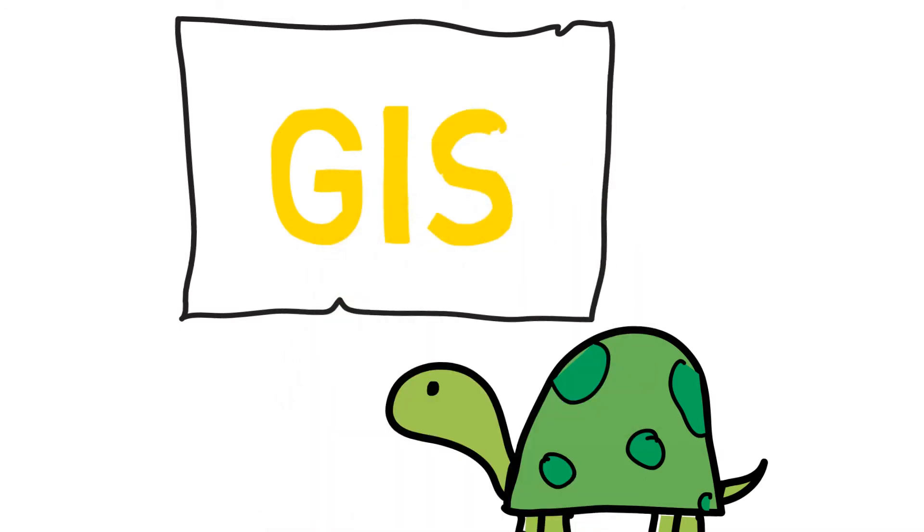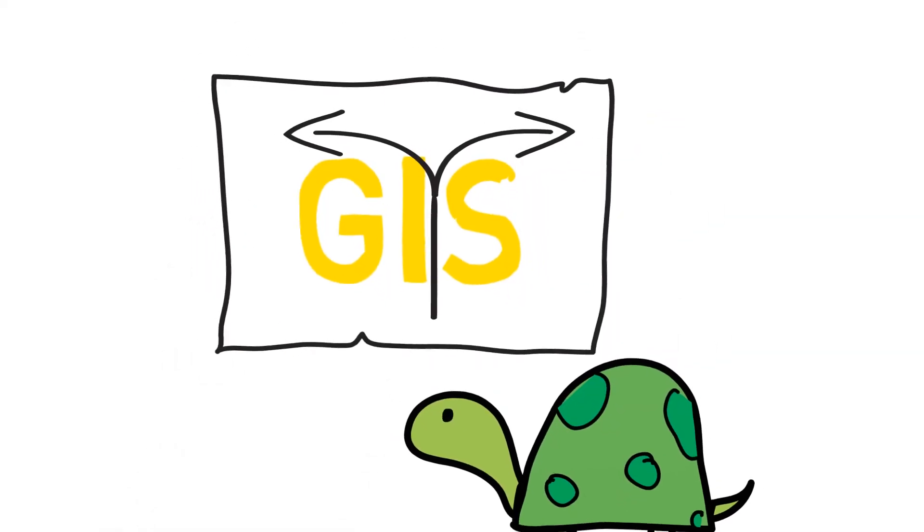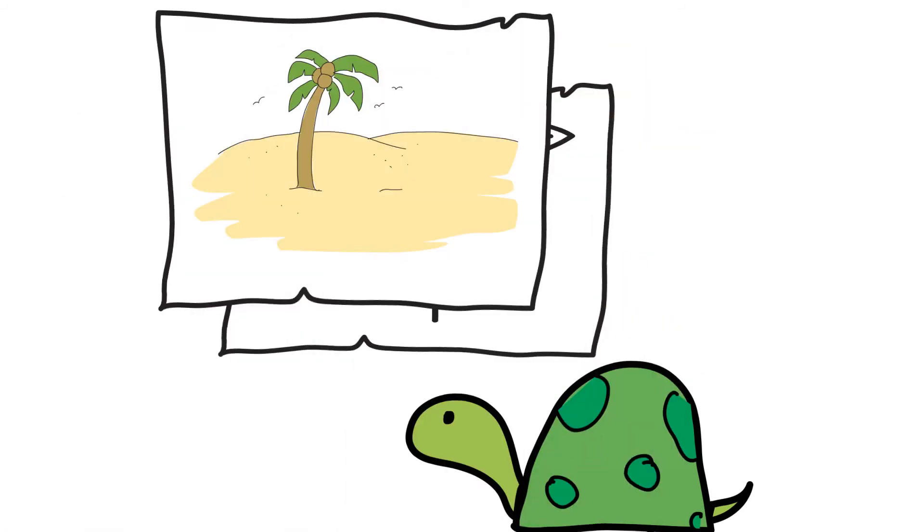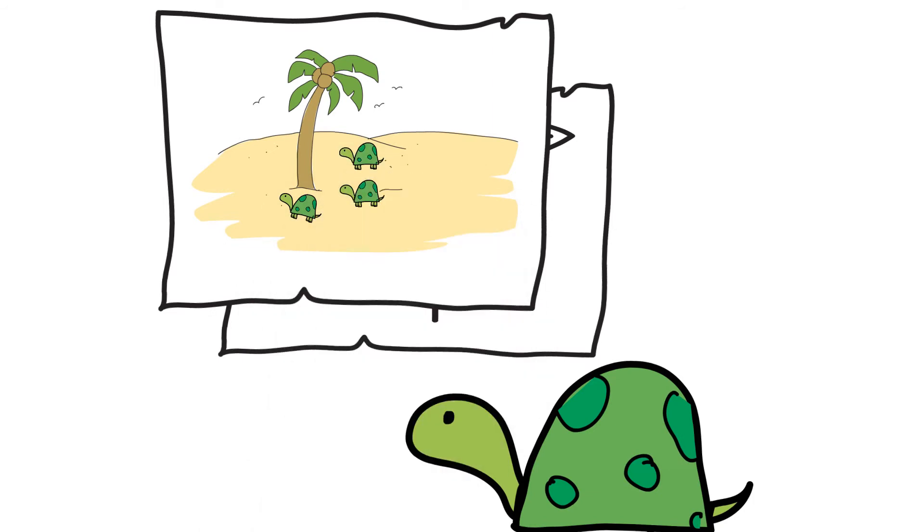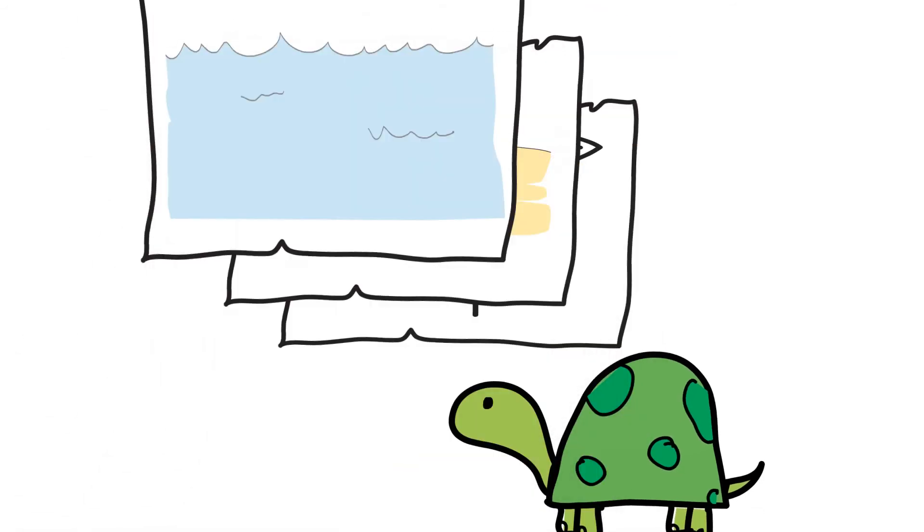GIS lets you work with many layers of geographical information. For example, you can find out how Vonu migrates from A to B. You can find Vonu's home, habitat, and friends. And of course, where Vonu goes to eat delicious seafood.